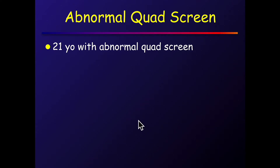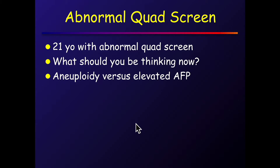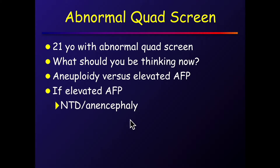Abnormal quad screen. We're still getting them — cell-free DNA is going to take over, but we're still doing these. She comes in, she's 21, she drove down from Wyoming, and we were told it was an elevated MSAFP. A low MSAFP would make us think of Down syndrome. The AFP is elevated, so we're thinking neural tube defects, anterior abdominal wall defects, and then some other random things to go through.